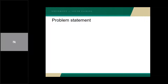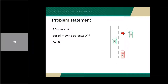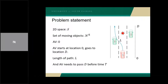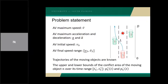Based on this, let me introduce the investigated problem in a formal way. We consider a two-dimensional space as an infrastructure where an AVA and a set of moving objects (MO) are present. The AVA starts at location 0 and heads to location D. The path for the AVA is fixed and the length of it is known. The AVA needs to pass location D before time T. The kinematic parameters of the AVA are given, such as the maximum speed, minimum and maximum acceleration, initial speed, and final speed range. We also assume that there is a reliable trajectory prediction algorithm, and the trajectories of the moving objects are known.